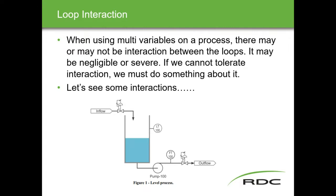The way we can tell if there's an interaction is we make a change in one of the control variables and ask: does it affect the process variable of the opposite loop? For example, if I increase the flow to the level valve, the level will increase — but will it increase or decrease our outflow? No, because the outflow is controlled by the flow transmitter controlling that valve. However, if I increase the outflow, it will cause the level to go down — so in that case there is an interaction. That's how we define what an interaction is.